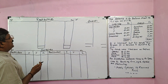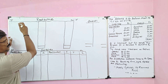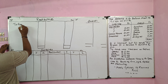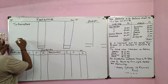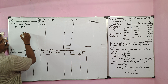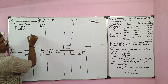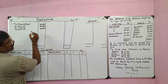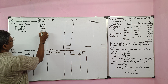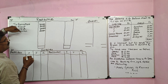As usual, we are going to prepare the realization account. The first entry: we should transfer all assets to the realization account. The entry is: Realization Account debit to all assets except cash and profit and loss account. Furniture book value 40,000; plant book value 20,000; stock book value 40,000; debtors book value 20,000. All assets should be transferred to the realization account at book value.